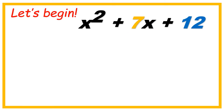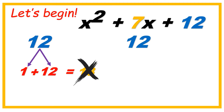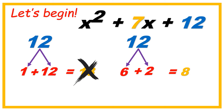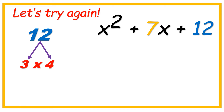Let's begin. x squared plus 7x plus 12. Let's look for the factors of 12. 1 times 12 is 12, but if we add them together, 1 plus 12, the answer is 13 — that's not it. Another factor: 6 times 2 is 12, but 6 plus 2 is 8 — that's not it. Let's try again. 3 times 4 is 12. Let's try to add them: 3 plus 4 is 7.